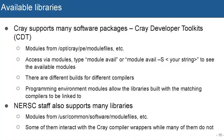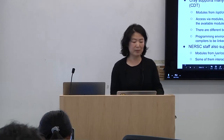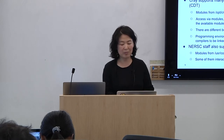Now let's talk about available libraries. If you log into Cori and type 'module available', you see literally tons of modules available. Many of them are Cray-provided libraries; NERSC staff also support a lot. You can tell which are provided by Cray and which by NERSC staff: modules coming from the /opt/cray path are provided by Cray, while modules from /usr/common are NERSC staff-supported libraries.